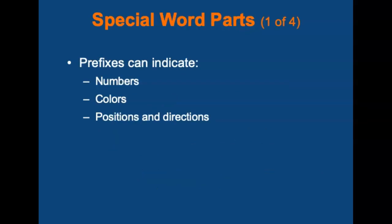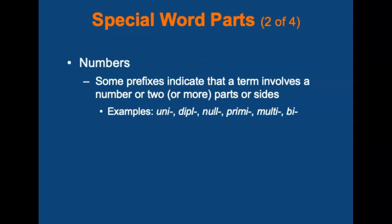There are also some special word parts. Prefixes can be used to indicate numbers, colors, positions, and directions. Several prefixes are used to indicate if a term involves a number, such as half, one, two, or more parts or size. Some examples are: uni-, dipli-, non-, premi-, multi-, and bi-.